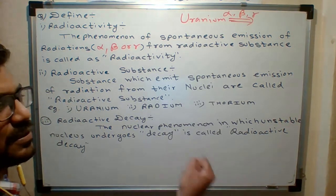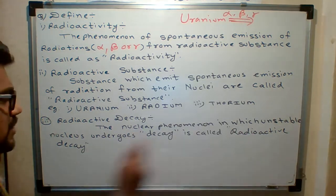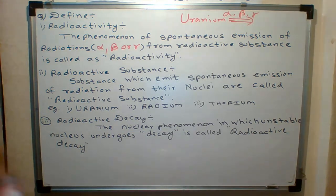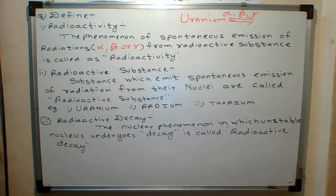So radiation occur means there is some decaying. This means quantity comes from time. The nuclear phenomena in which unstable nucleus undergoes decay. Decay means that its quantity comes from time. Then such process is called radioactive decay.